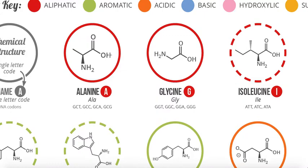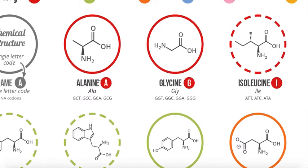An important thing to note about a lot of these diagrams of amino acids is that they aren't entirely accurate. The reason why they're not accurate is because they depict a protonated carboxyl group and a deprotonated amino group. As we know, it's much more difficult to deprotonate an amino group than a carboxyl group — this doesn't exist in nature. The pKa of a carboxyl group is around 2, so you'd have to be below 2 to have that, but above 9 to deprotonate the amino group — you can't have both simultaneously, so this depiction is not correct.